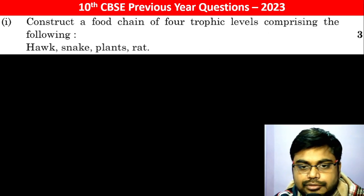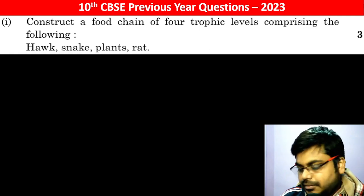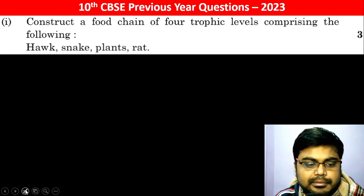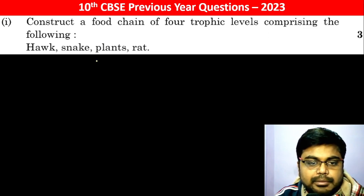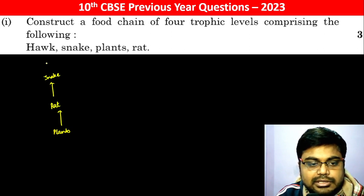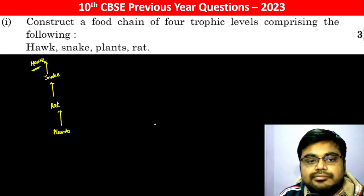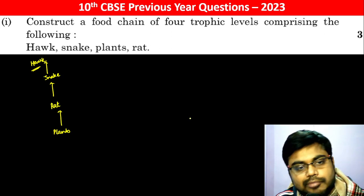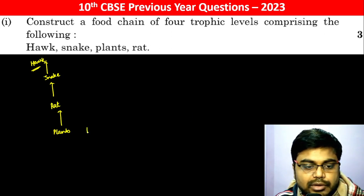Construct a food chain of four trophic levels. The plants are the producers. Plants are eaten by rat, rat is eaten by snake, and the snake gets eaten by hawk. So this is the food chain of the four trophic levels.